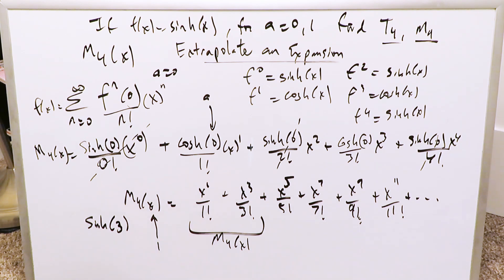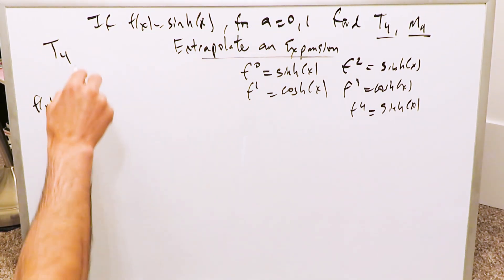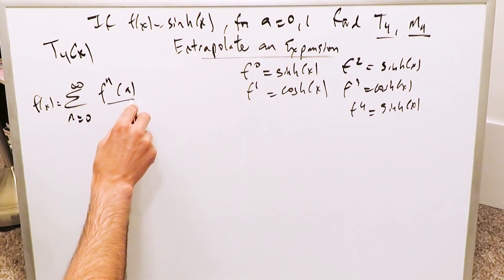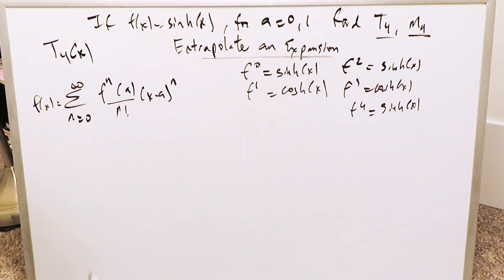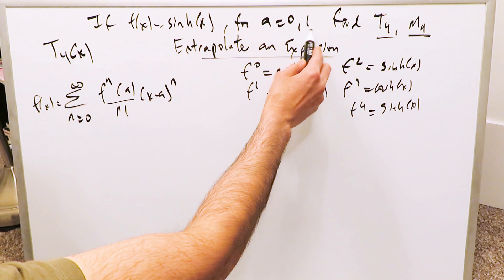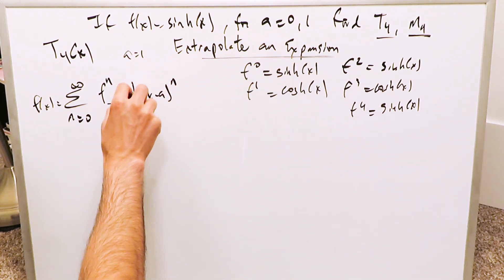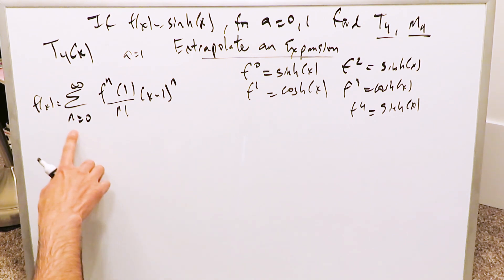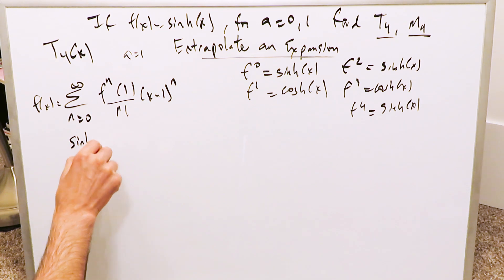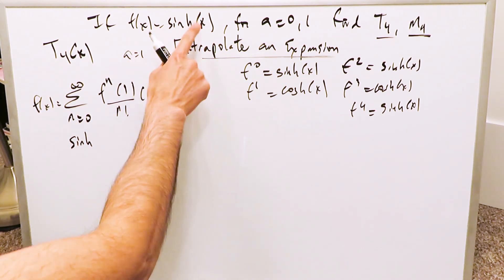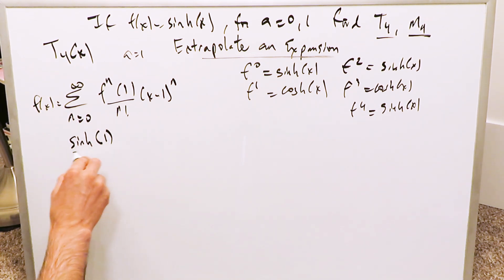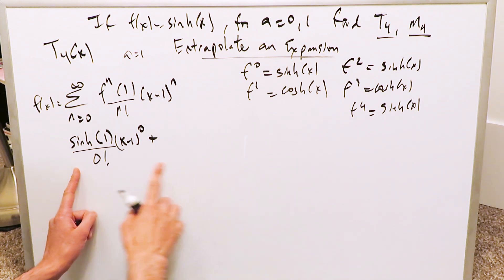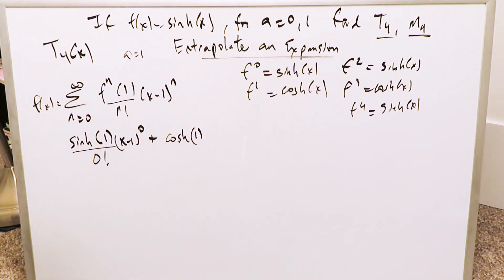Now let's look at the Taylor polynomial for the same function. Taylor designation T4(x). You know the formula: nth order derivative evaluated at a, divided by n factorial, times x minus a to the power of n. Here a equals 1. The first term at n equals 0 is hyperbolic sine of 1, divided by 0 factorial, times x minus 1 to the power of 0. The next term is hyperbolic cosine of 1 — and this is what I was saying, things get a little complicated because these are decimal numbers when you take the calculator out.